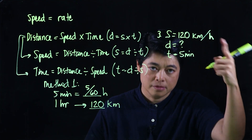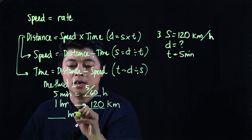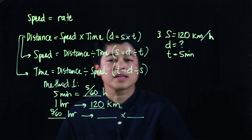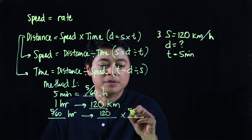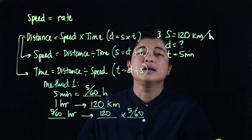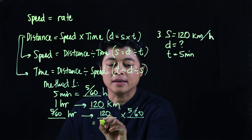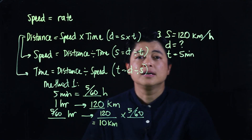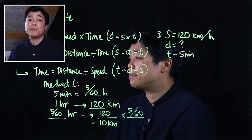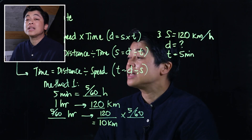Since one hour equals 120 kilometers, we set up the ratio: 1 hour corresponds to 120 kilometers, and 5/60 of an hour corresponds to the unknown distance. Multiplying 120 by 5/60 gives us 10 kilometers. That is the book's ratio approach. For me, that is equivalent to the equivalent fraction approach, and I'll show my way of doing method one without all that extra working.